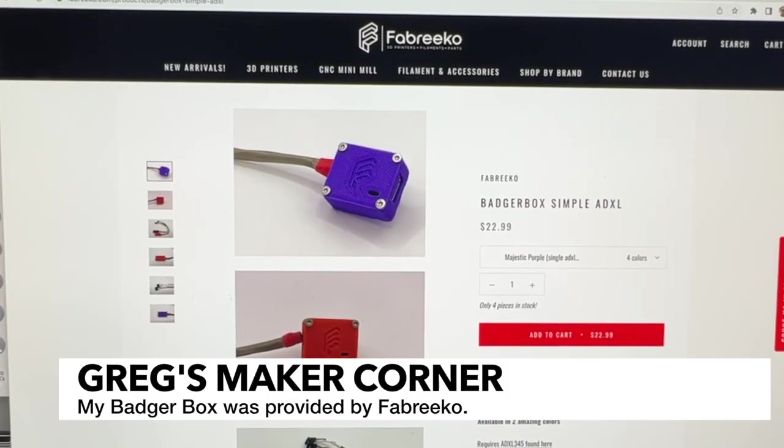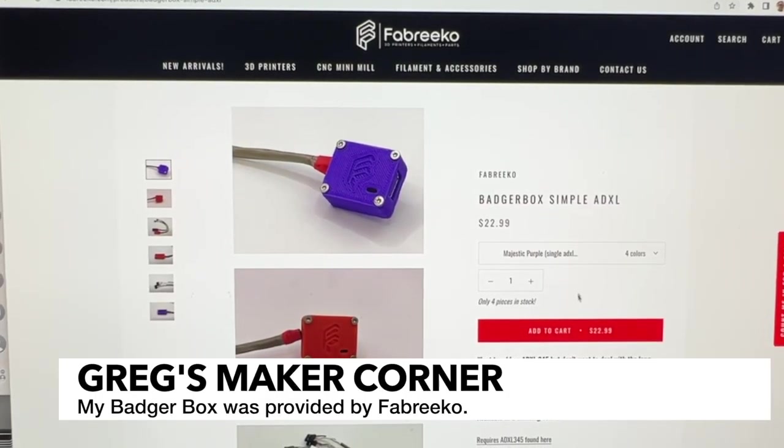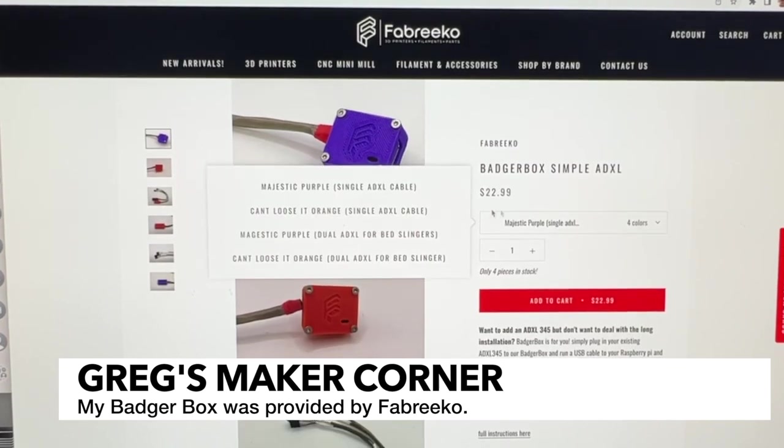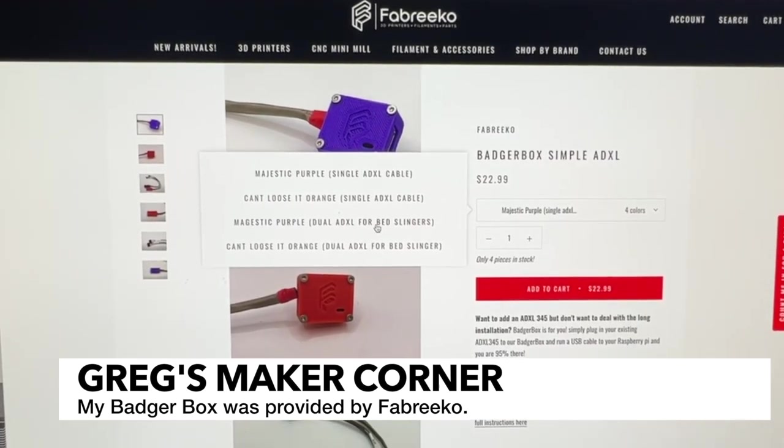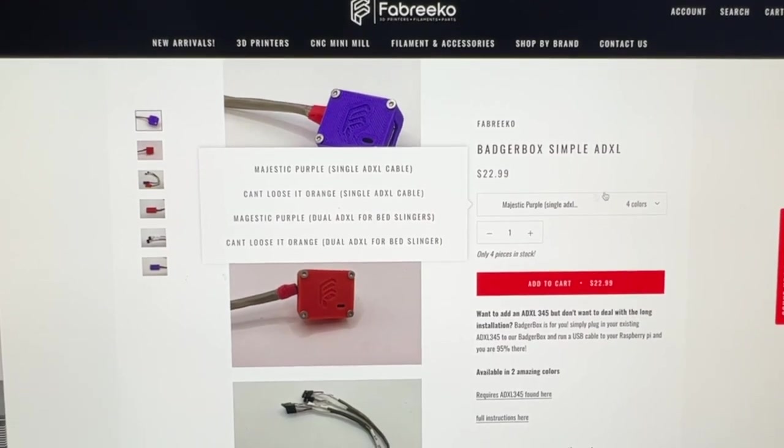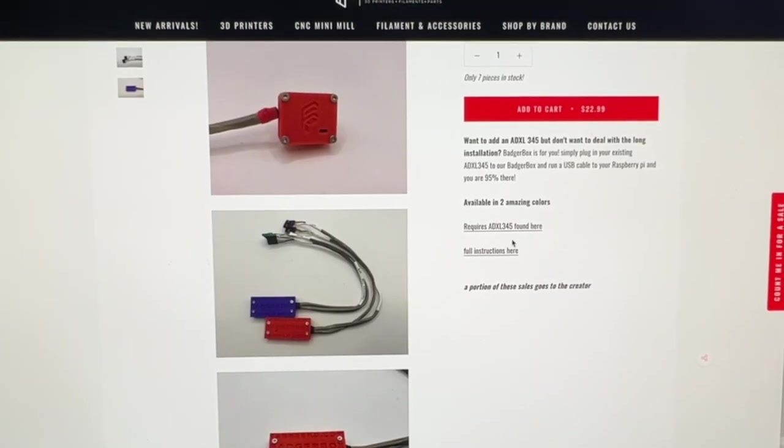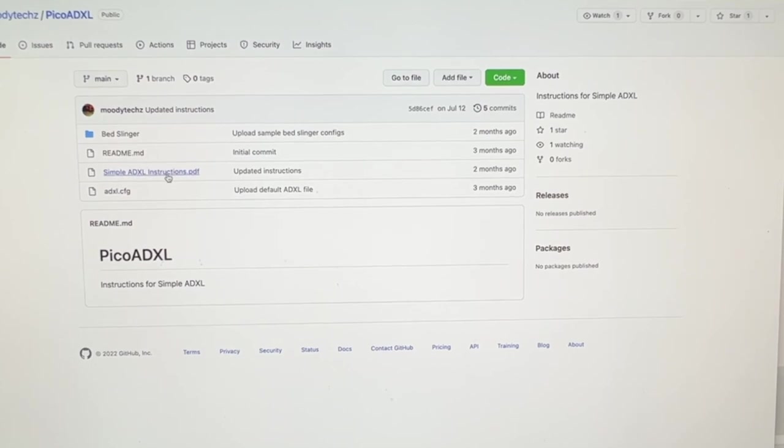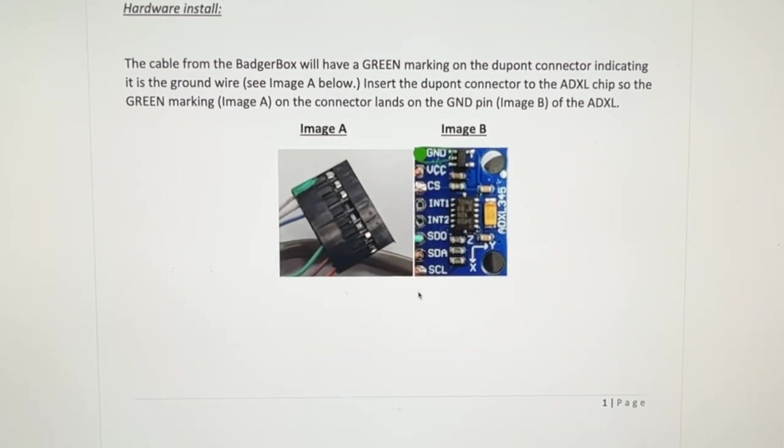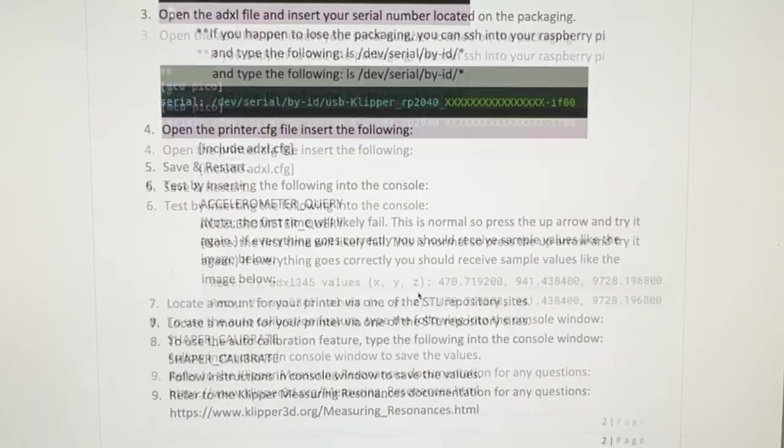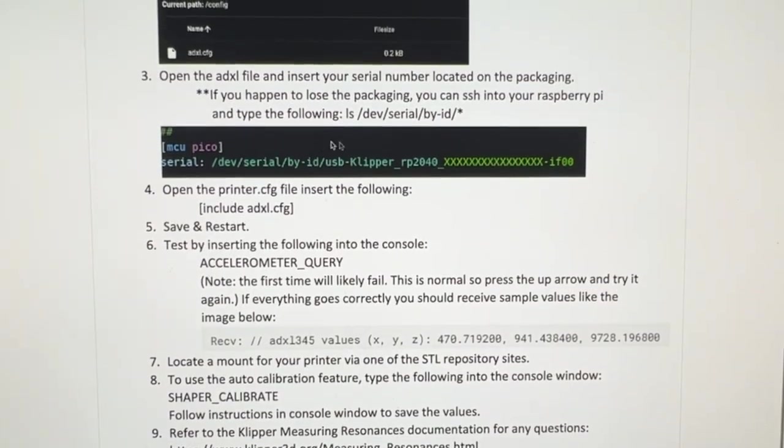Here you can see on Fabreeko where these are sold. So there's a simple version. I believe there may be some other versions also. You've got a single ADXL or you can get a dual for the bedslingers. You can also read the full instructions which is pretty much right here. There's a PDF of it and I'll have this link so I'm not going to read through all this, but this gives you the idea of how you're going to do it and set it up.